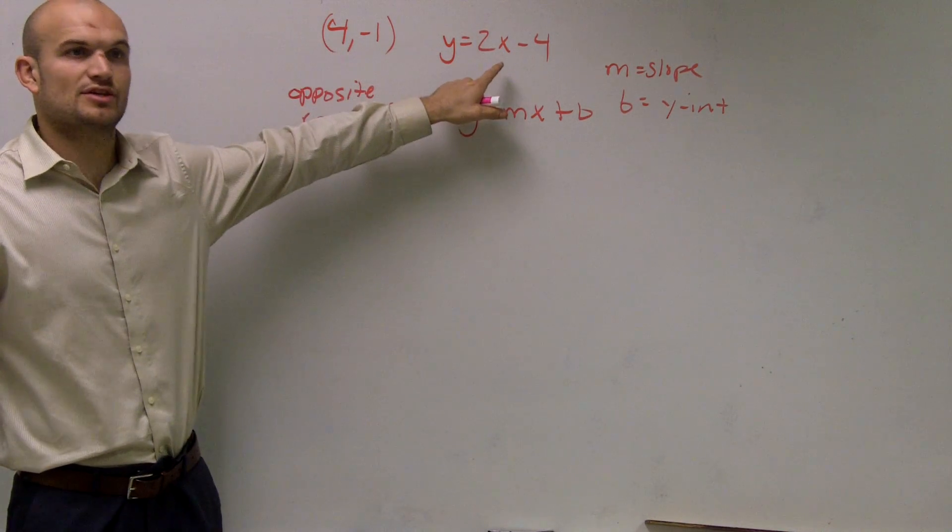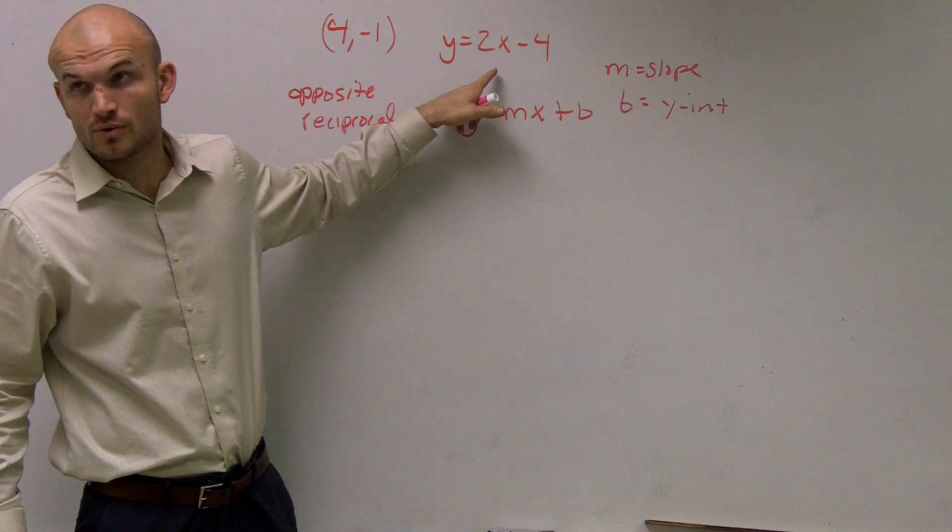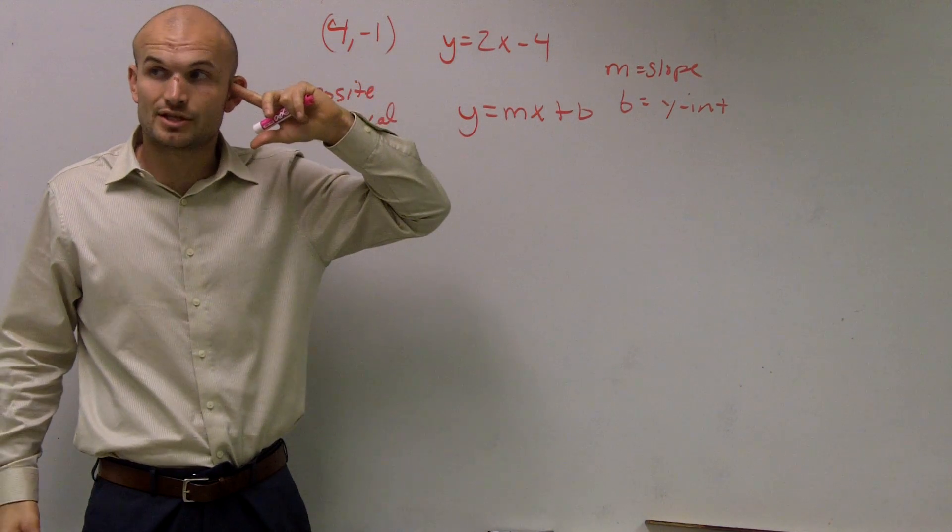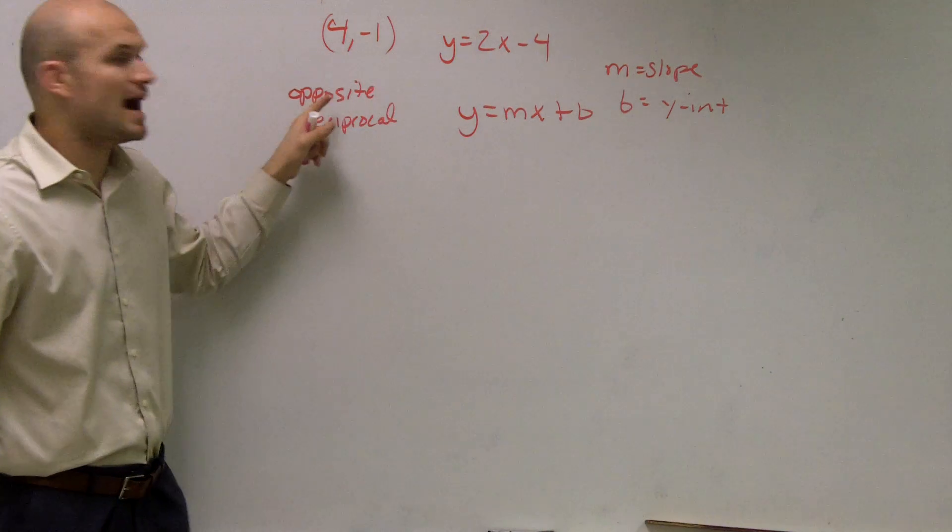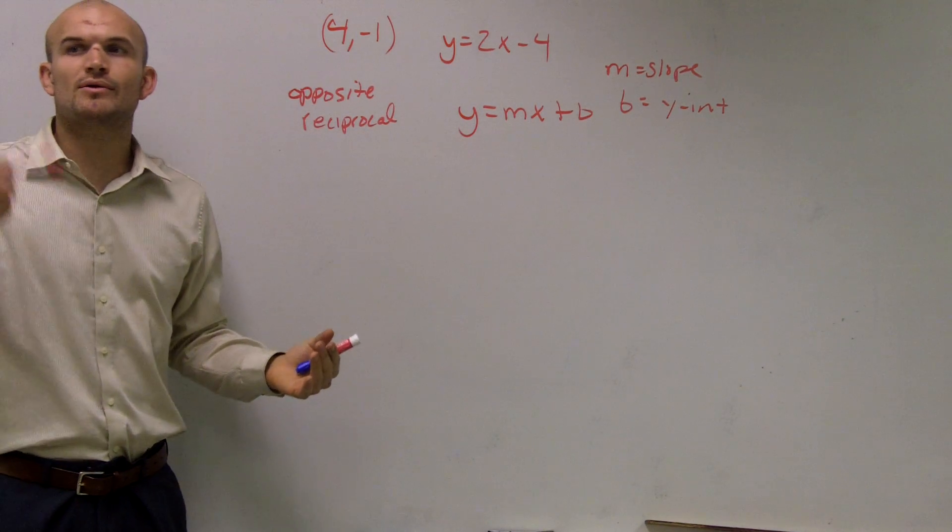So what is the slope of this equation? Remember, m is your slope, so the slope of this equation is 2. If I want to find a perpendicular slope, I have to find the opposite reciprocal slope. When I'm talking about opposite, you might want to be writing this down.